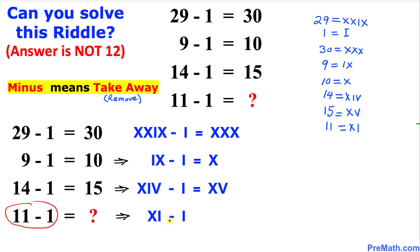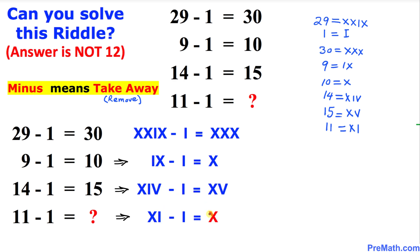Finally, 11 minus 1 has been converted into Roman numerals, and once again we are going to remove, take away, this I from here. Our answer turns out to be X, and we know X is the same as 10. So our answer is going to be 10.